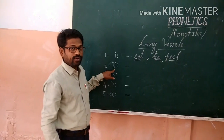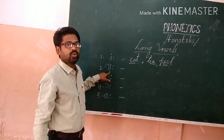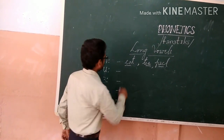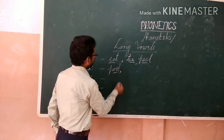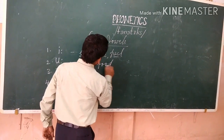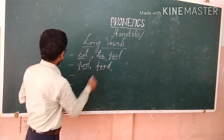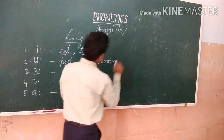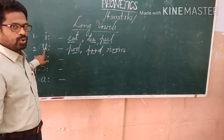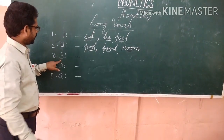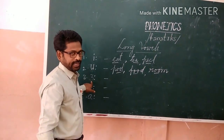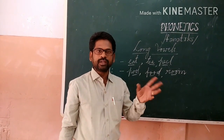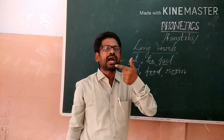The next long vowel is the longer version of the short vowel U. This is the long 'oo' sound.